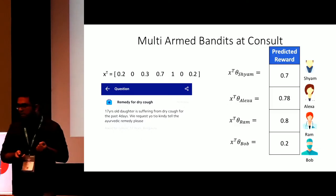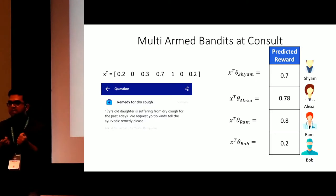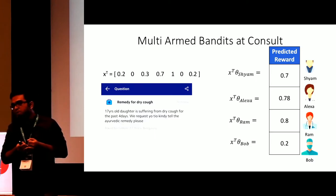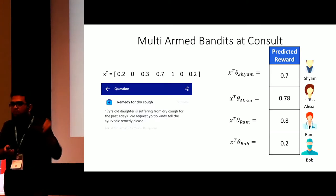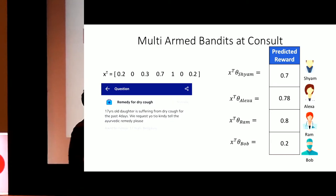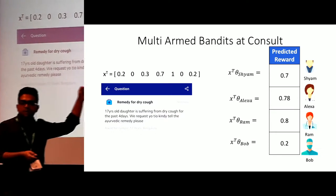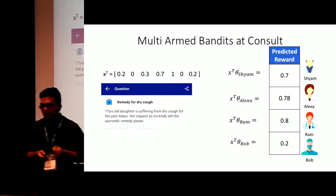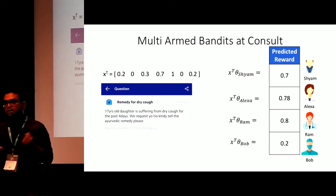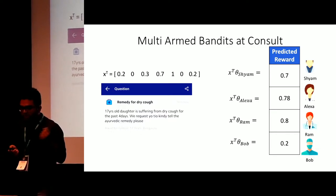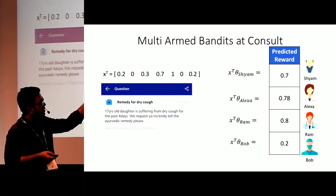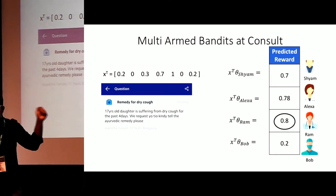For every question, we build a contextual feature vector. The features can include the number of words, the time the question came in, the age and gender of the patient, etc. We multiply that contextual feature vector with the parameter vector of each doctor to get a predicted reward — essentially how likely that doctor is to give the fastest response. The higher the reward, the faster the response. So we simply pick the doctor with the highest predicted reward and assign the question to them. In this case, Ram has the highest predicted reward, so we assign the question to him.